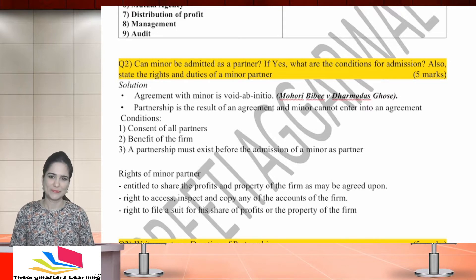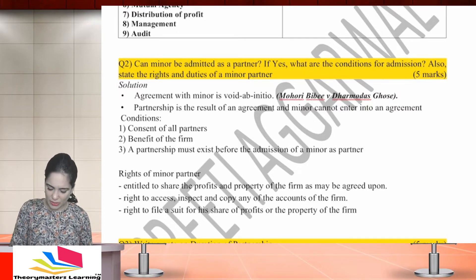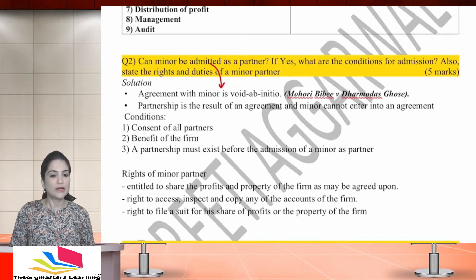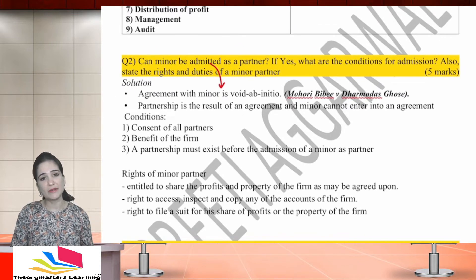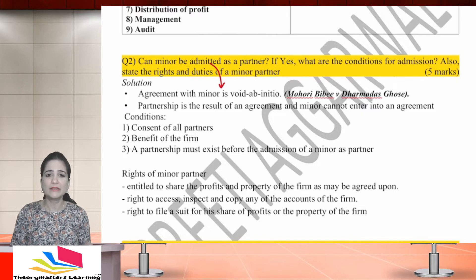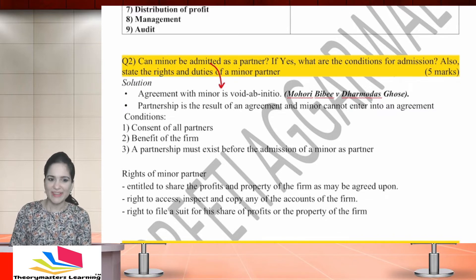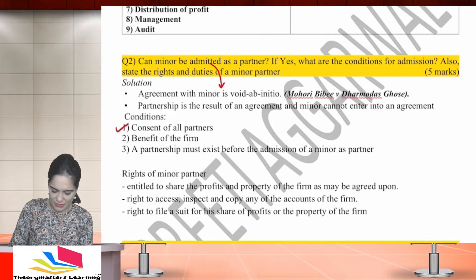Ideally no, but yes, under certain circumstances. First, write that prima facie a minor cannot be a partner — an agreement with a minor is void ab initio. You can write the case law: Mohri Bibi versus Dharmu Das Ghosh. You cannot enter into a contract with a minor, and partnership is the result of an agreement. Since a minor cannot enter into an agreement, and partnership is based on agreement, a minor cannot become a partner. That is the basic rule.